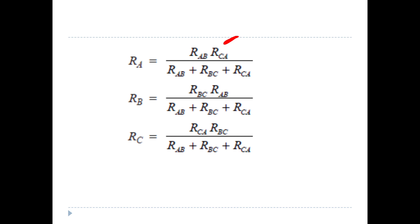If you have the derivations, you can use the formulas directly. RB equals RBC multiplied by RAB, divided by the sum of RAB, RBC, and RCA. RC equals RCA multiplied by RBC, divided by RAB plus RBC plus RCA. This completes our delta to star conversion formulas.